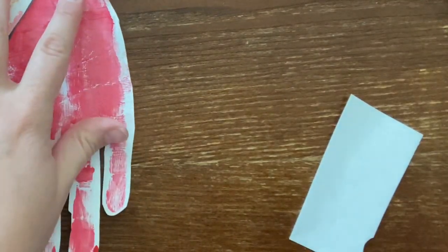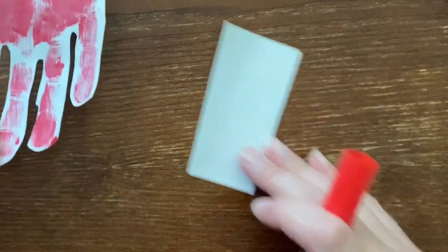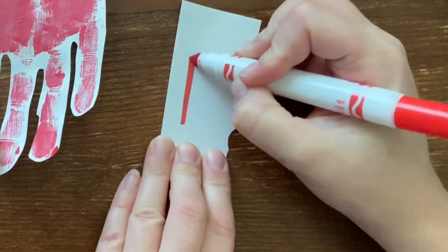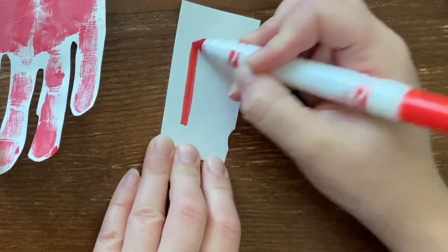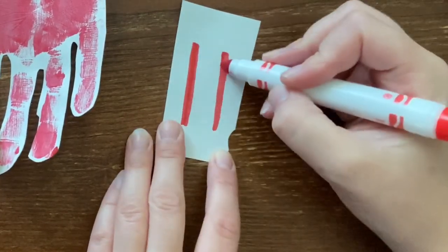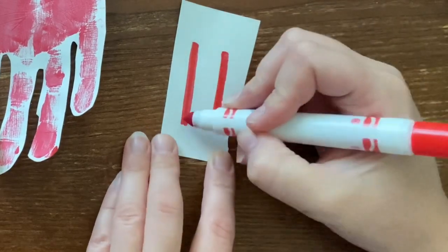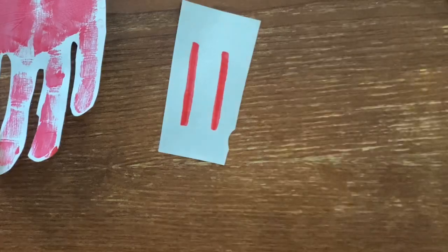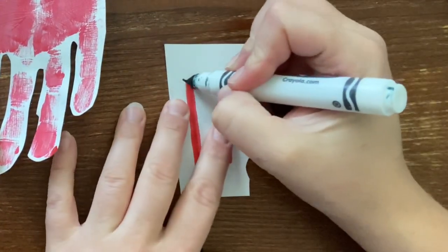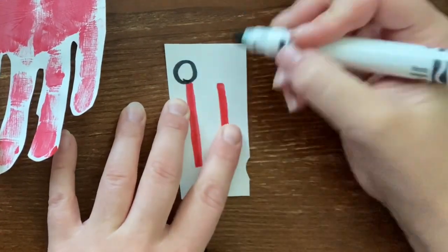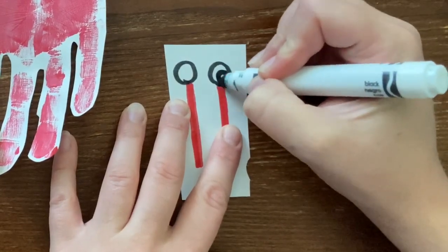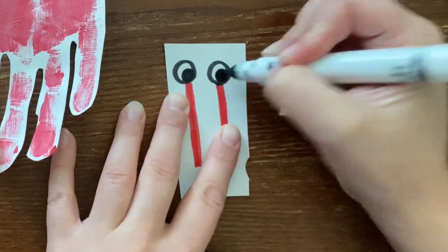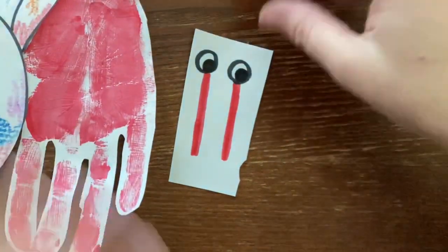So if you don't have pipe cleaners, another way you can go about doing his eyes is taking a red marker or a red crayon and doing two lines just like this. And then you can get out black and do his eyes. So that's also another way you can do it if you don't have those.